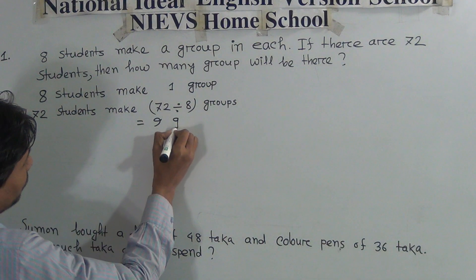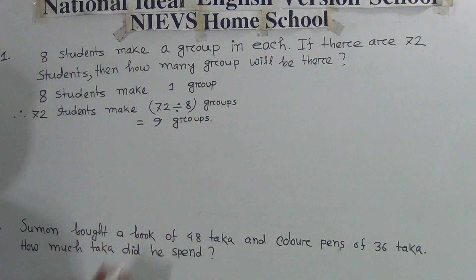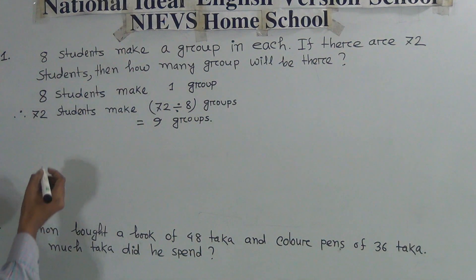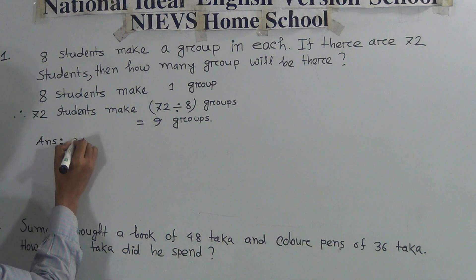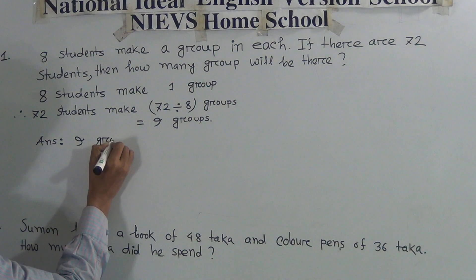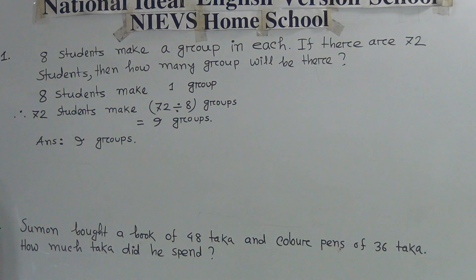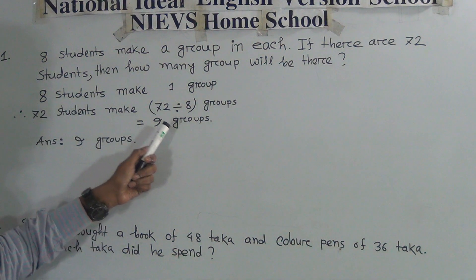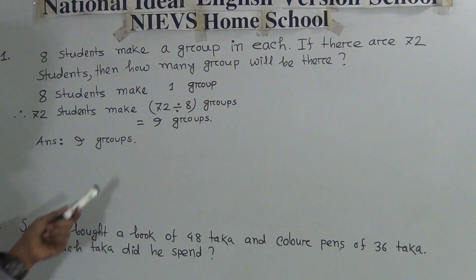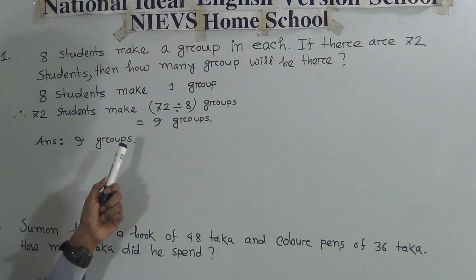So we write 9 groups. Our answer is 9 groups. This problem depends on understanding the times table, so you must memorize the times table.